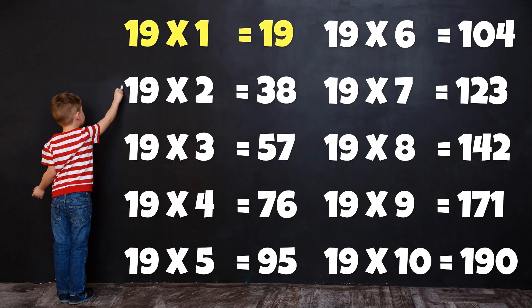Table of 19. 19 1's are 19. 19 2's are 38. 19 3's are 57. 19 4's are 76. 19 5's are 95. 19 6's are 114. 19 7's are 133. 19 8's are 152. 19 9's are 171. 19 10's are 190.